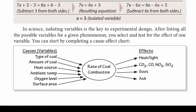In science, isolating variables is a key to experimental design. To do an experiment about the rate of coal combustion, first you can start by listing the types of variables that might affect it — the type of coal, amount of coal, heat source, and so on. Then you can design an experiment to isolate one of those variables and test it.